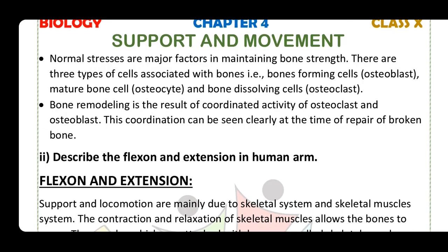Normal stresses are major factors in maintaining bone strength. There are three types of cells associated with bones: osteoblasts (bone-forming cells), osteocytes (mature bone cells), and osteoclasts (bone-dissolving cells).